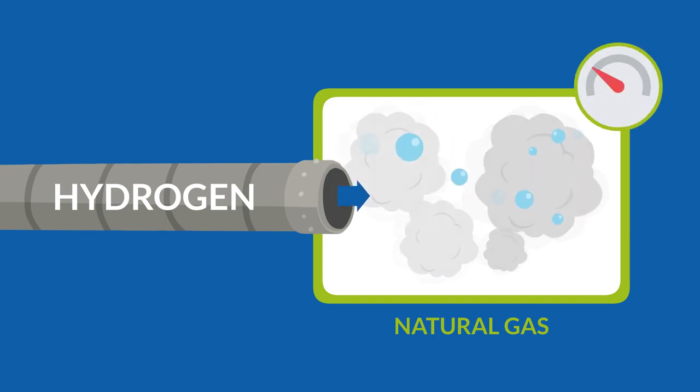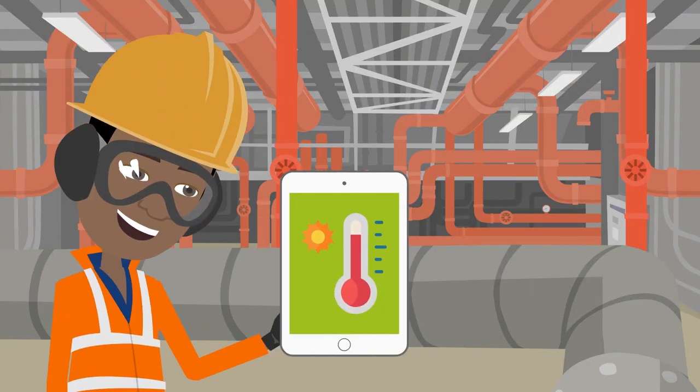Then, high hydrogen concentrations in the natural gas network appear. As it turns out, watching over the temperature makes a difference in blending efficiency.